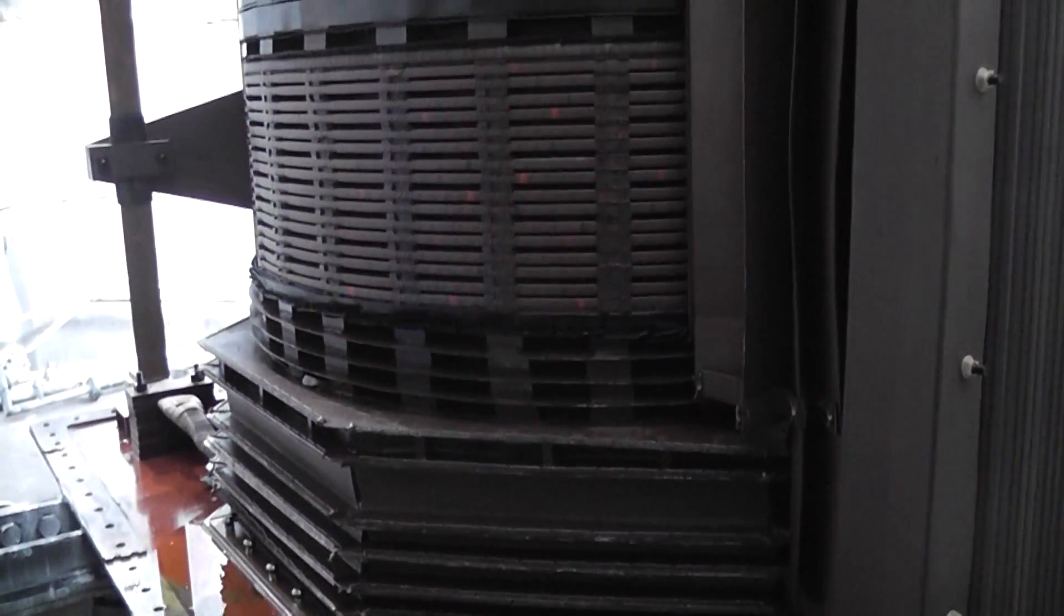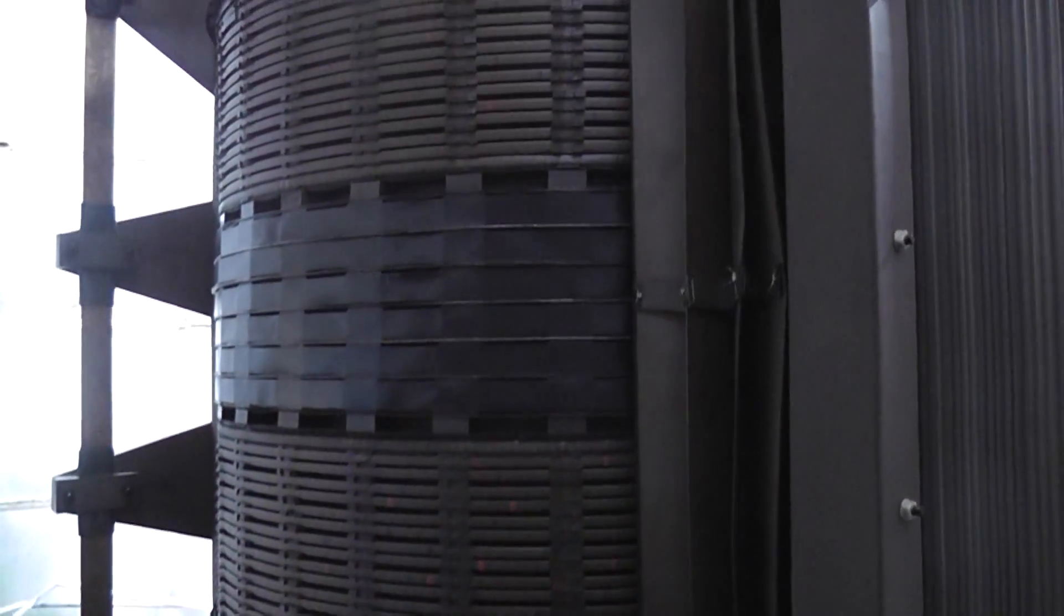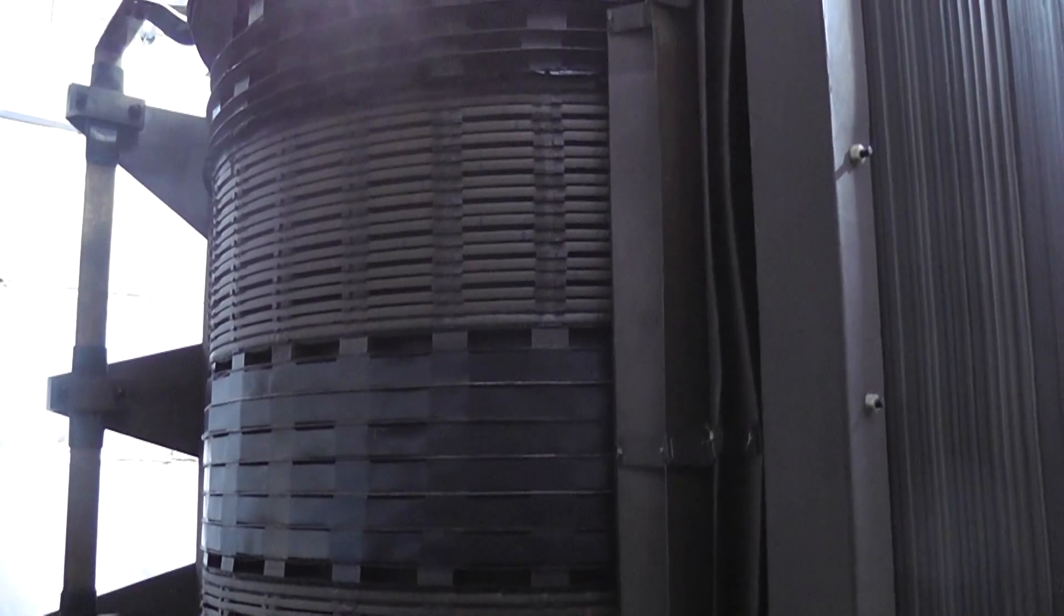The other side of the transformer. 220 kV winding, disc winding on the outside and the 33 kV winding is on the inside, not visible unfortunately.